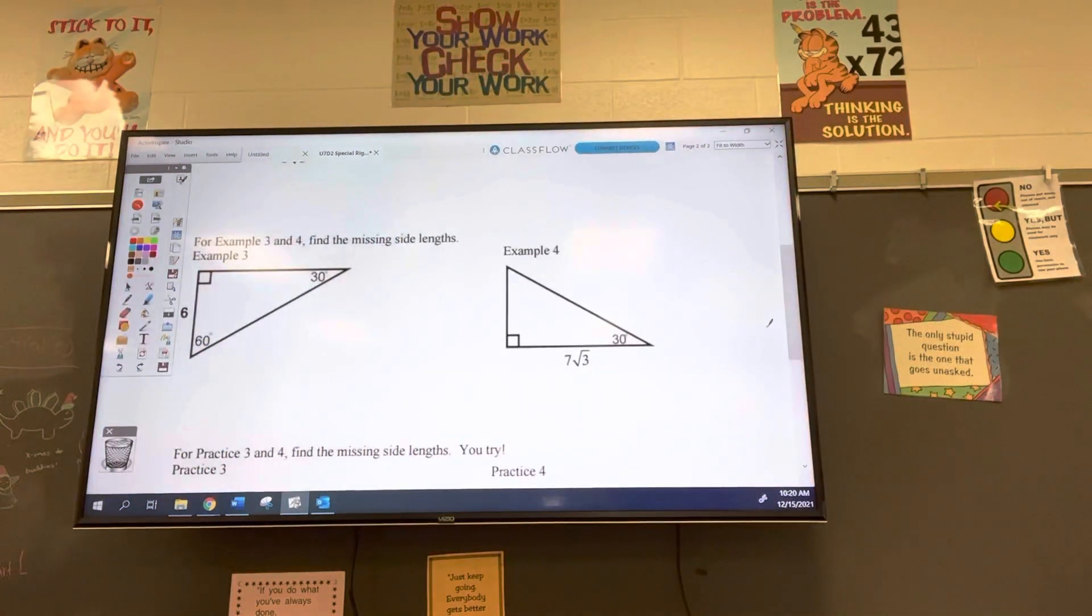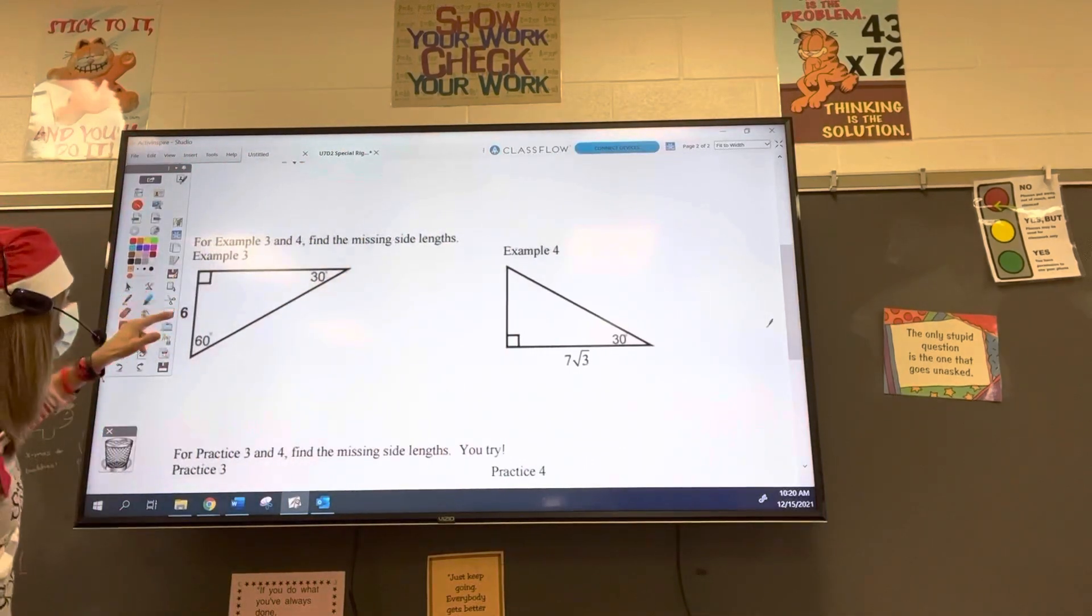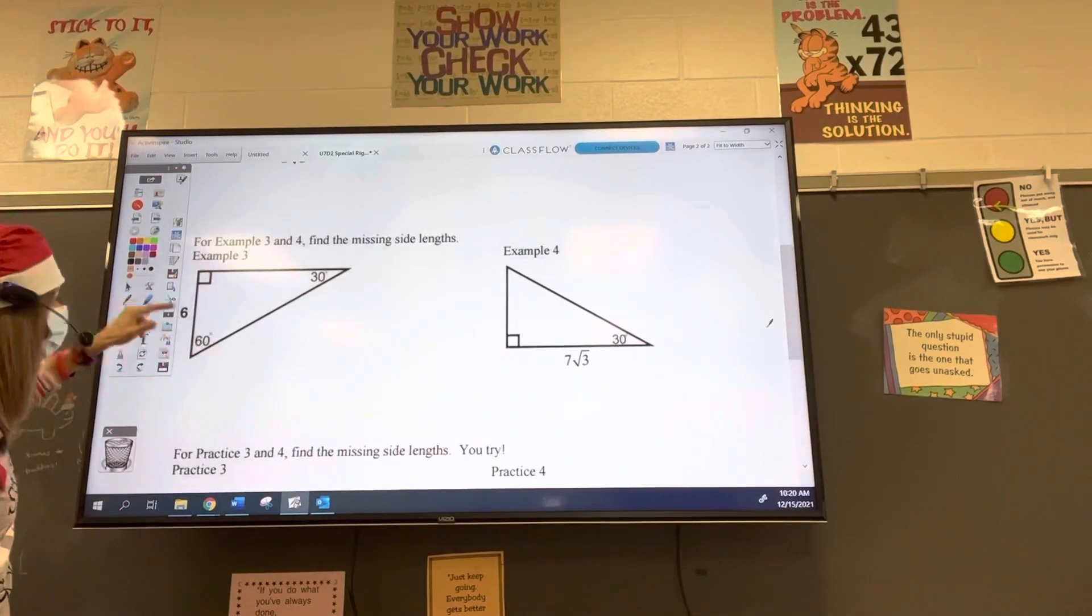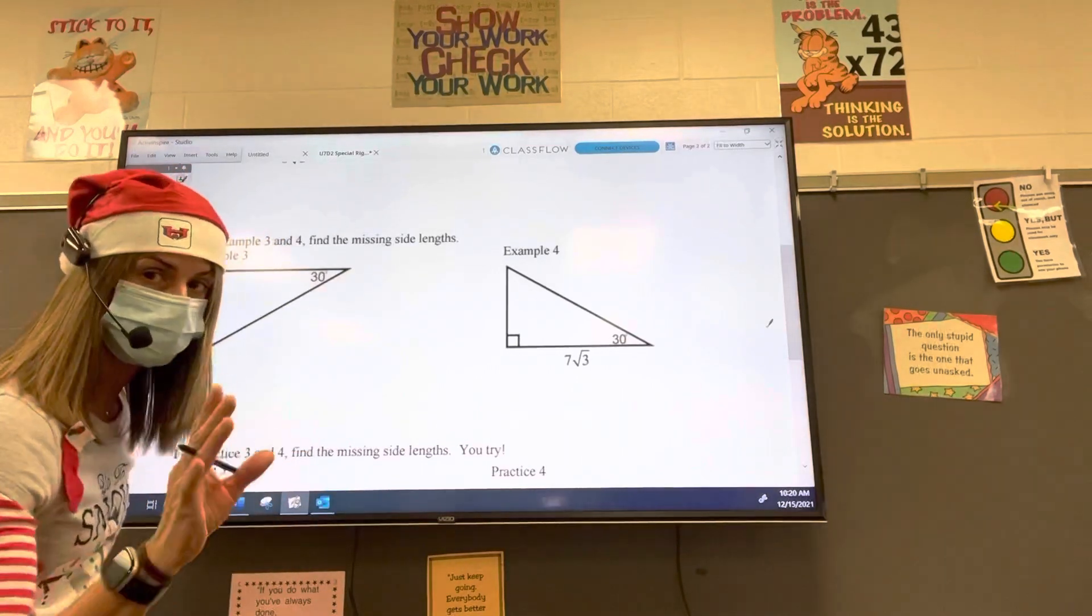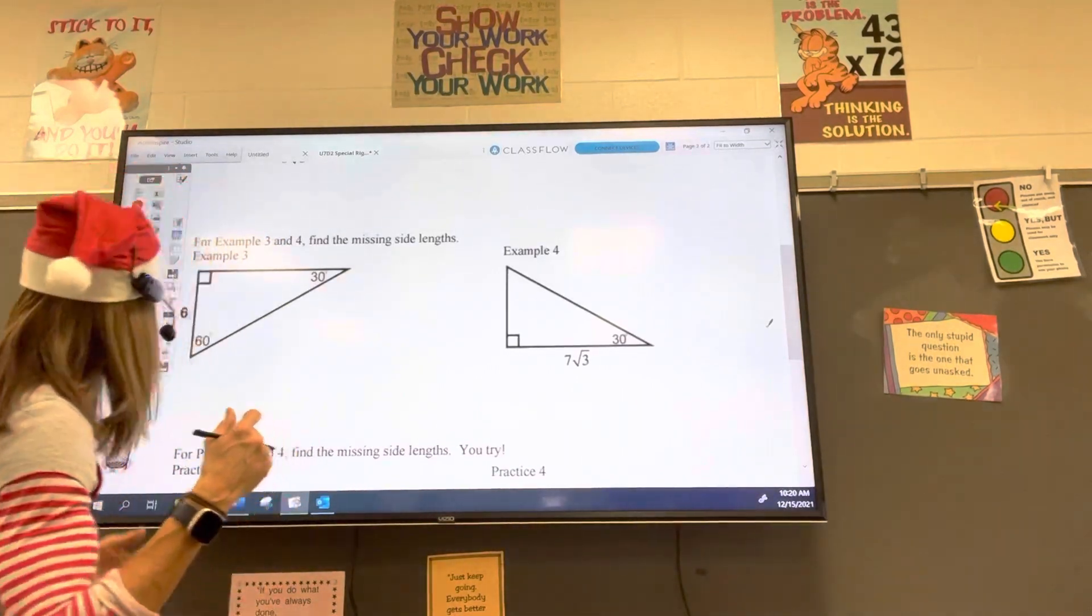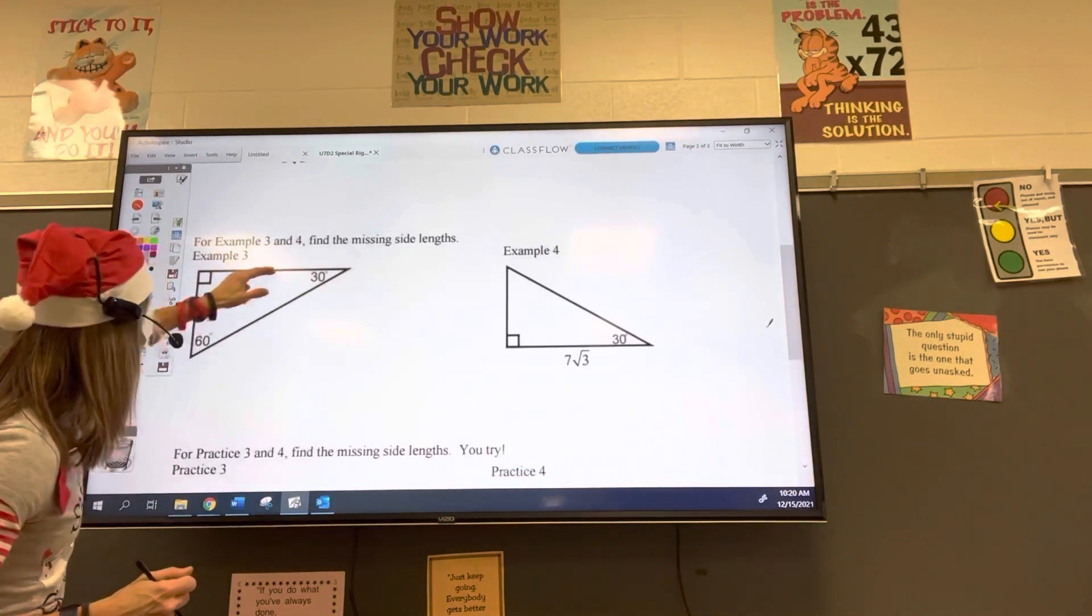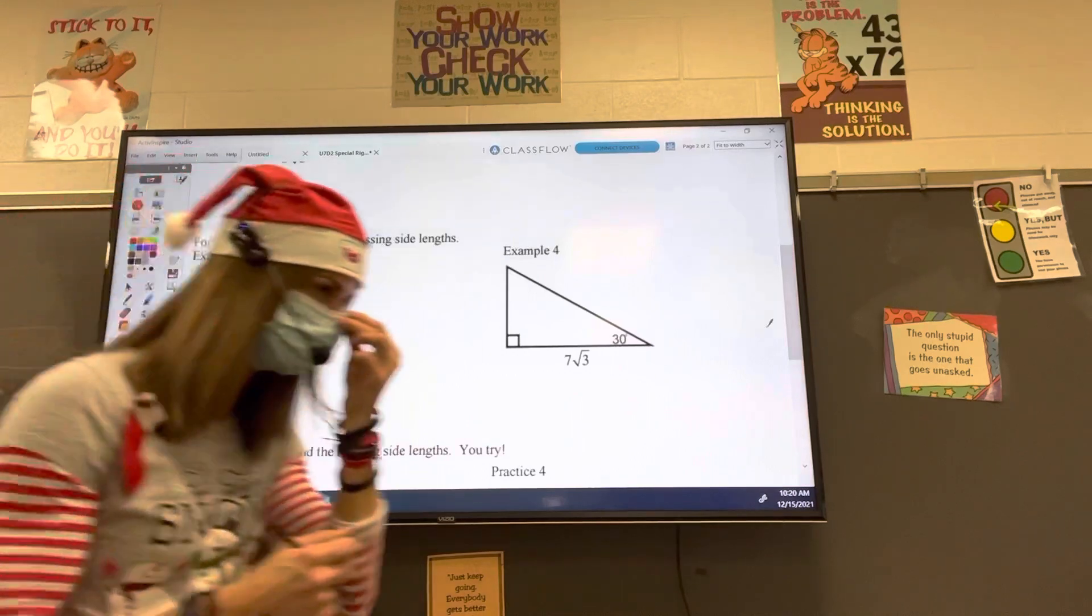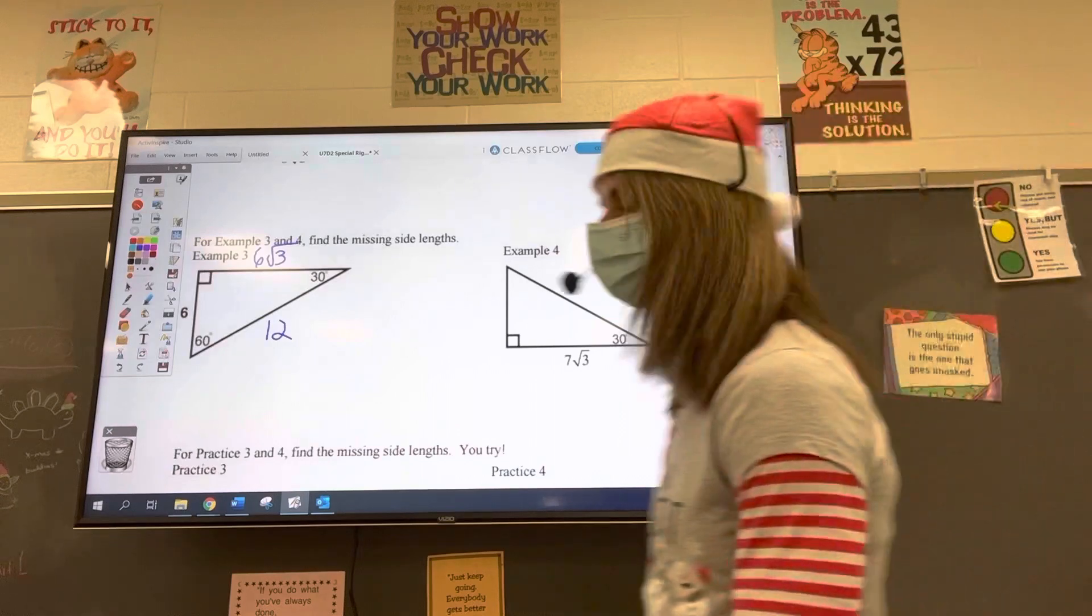So if I look at example 3, and I see the only length I have is 6. The 6 is across from the 30, which makes the 6 the short side, which is nice, because now we know we have our starting point. This is the long leg. So 6 times square root of 3 gives us the length of the long side. So that's 6 root of 3. And then 6 times 2 gives us hypotenuse. Done.